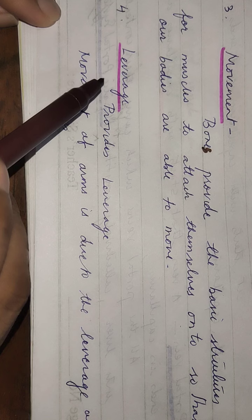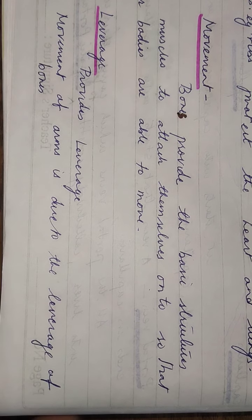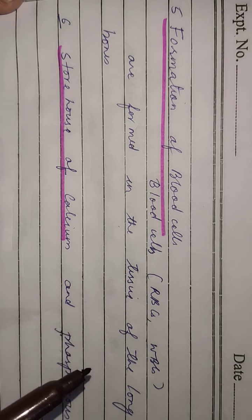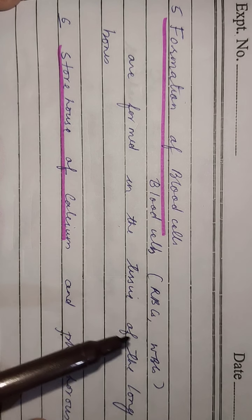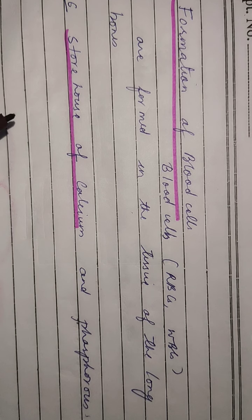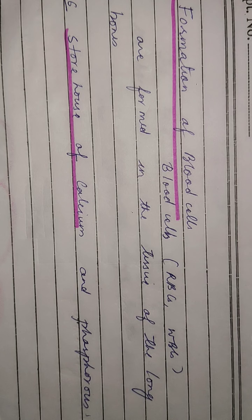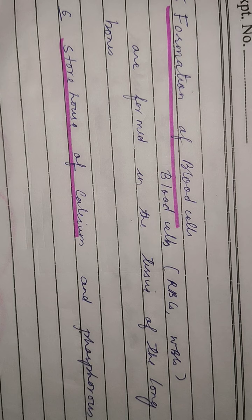The fourth function is leverage — it provides leverage; the movement of arms is due to the leverage of the bones. Fifth is formation of blood cells — RBCs and WBCs are formed in the tissue of the long bones. And sixth is storehouse — bones store calcium and phosphorus. So this is what we have learned: what is the skeleton and the functions of the skeleton.